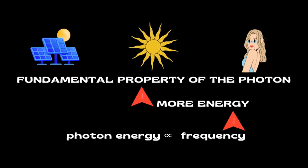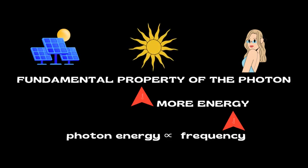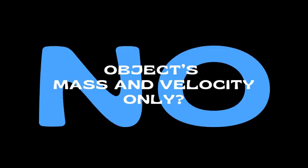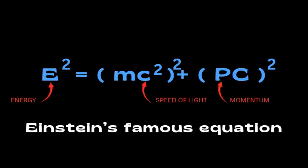But energy is not the whole story. Photons also carry momentum, despite having no mass. Momentum, as we usually think of it, comes from an object's mass and velocity. So how can something with no mass have momentum? This is where the unique nature of light comes in. Photons derive their momentum purely from their energy. This relationship is described by Einstein's famous equation, which ties energy, momentum, and the speed of light together.